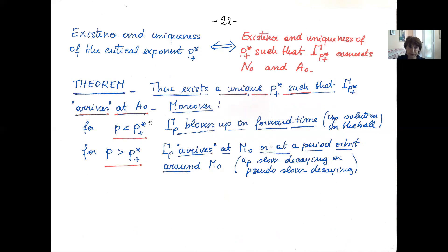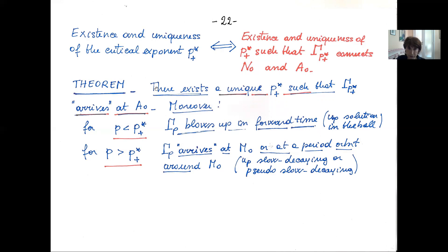The theorem we can prove is: there exists a unique critical exponent P^*_+ such that the orbit gamma(P^*_+) exiting N_0 arrives at A_0. Moreover, if P is smaller than P^*_+, the orbit gamma(P) blows up in forward time, corresponding to solutions in the ball. If P is larger than the critical exponent, the trajectory from N_0 arrives at M_0 or at a periodic orbit around M_0, so the corresponding solution is either slow decaying or pseudo slow decaying.